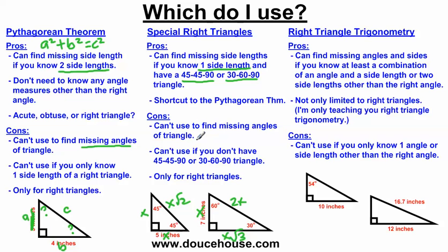But there are cons to using special right triangles. You can't use them to find angle measures — just like the Pythagorean Theorem, it's only for sides. Also, you can't use special right triangles if you don't have a 45-45-90 or a 30-60-90 triangle. What if one of these angles was 20 degrees, or what if one of these angles was 75 degrees? You can't use special right triangles to find missing side lengths in those cases.